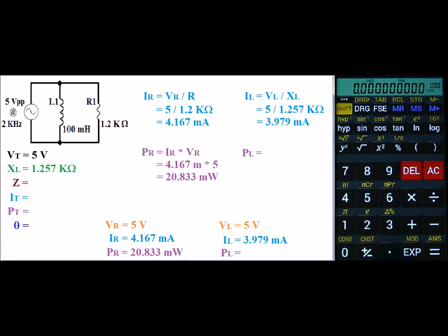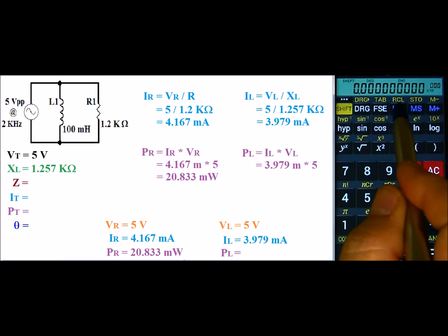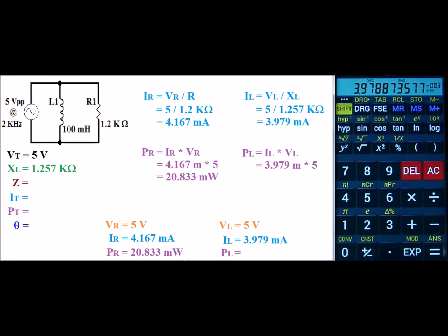Next, let's find PL. PL is going to be IL times VL. So we have 3.979 milli times 5. So go ahead and now recall my current and multiply it times 5. And that gives us a power of 19.895 milliwatts.